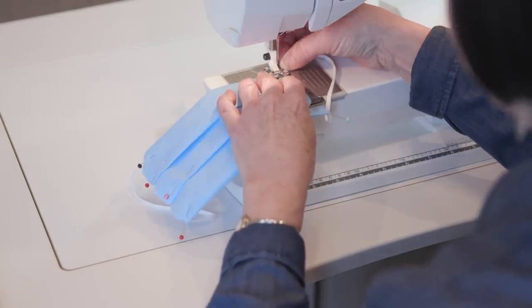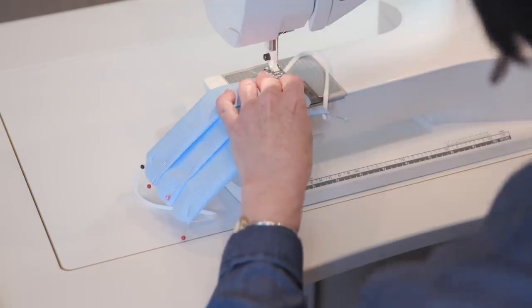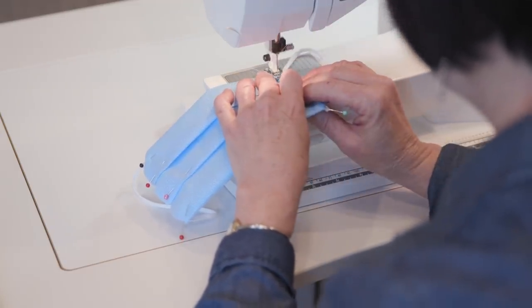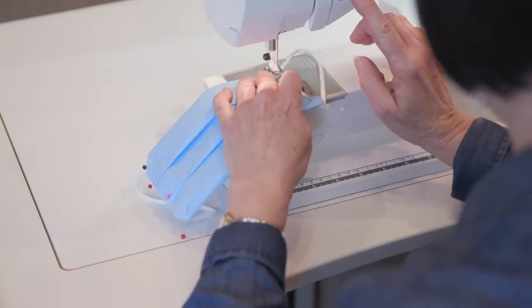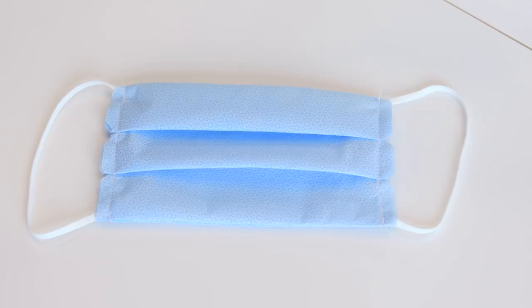Make the seam wide enough to avoid stitching on the notches. Stitch again at corners to reinforce. Repeat to form the second ear loop. The mask is now complete.